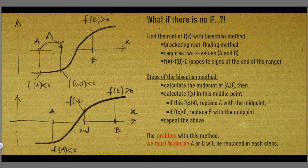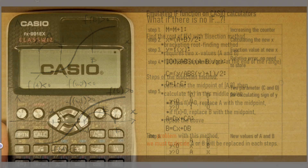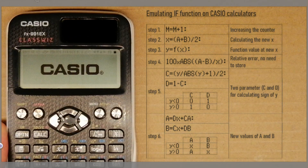The problem with this method: we must decide whether a or b will be replaced, based on the sign of the function at the midpoint. Because if the if-function is not available, we must develop a structure to emulate it.